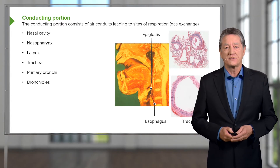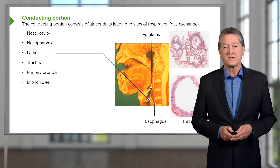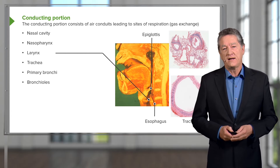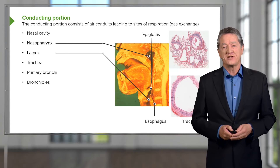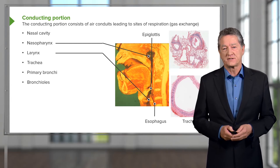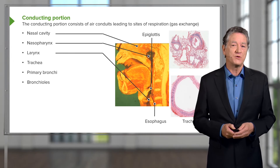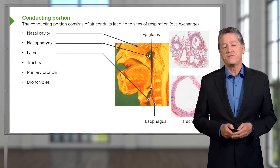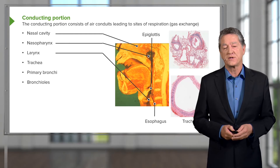The larynx is our structure for speech production, and I'll go through that in more detail at a later time. The bulk of the upper conducting portion of the airway consists of the nasal cavity and just at the back of the nasopharynx. Looking at the nasal cavity, you can see a division between the nasal cavity and the oral cavity — that's the hard palate and the soft palate towards the posterior aspect.